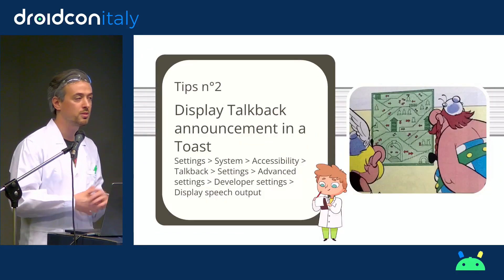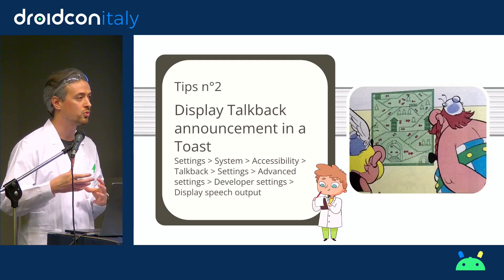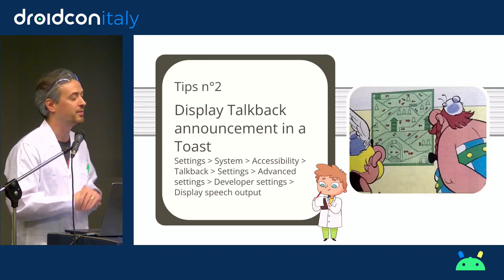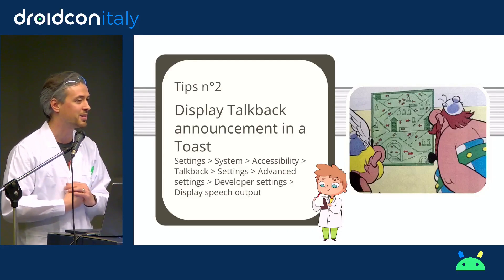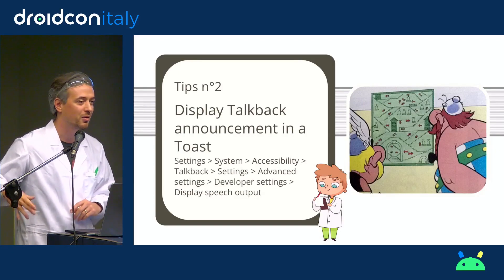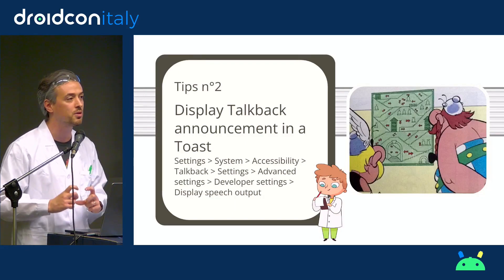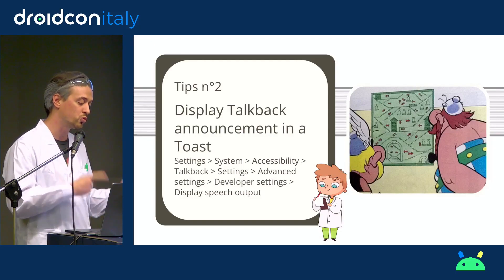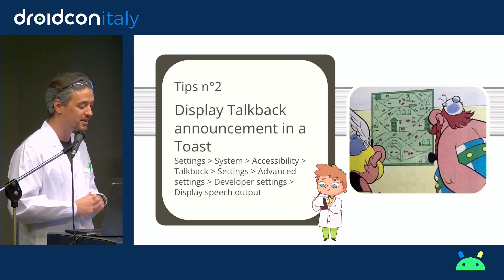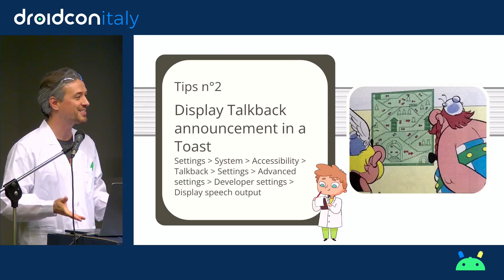A quick tip we'll use during the demo: if you don't want TalkBack to say everything aloud — because colleagues don't like TalkBack in the office — you can deactivate TalkBack's sound and activate subtitles at the bottom of the screen. Go to Settings > System > Accessibility > TalkBack > Settings > Advanced Settings > Developer Settings > Display Speech Output. It's a nightmare to find, but it exists.